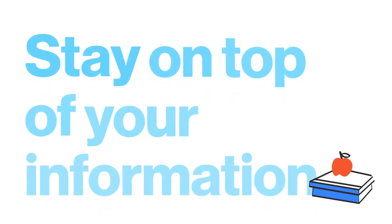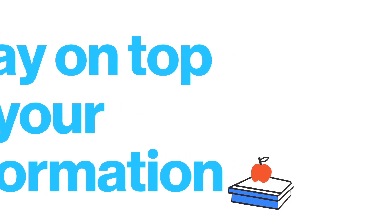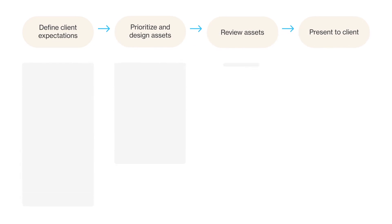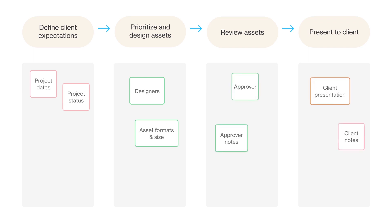To act on these steps, you need to have access to the right information. Continue mapping out your workflow by identifying the information you need at each step. For example, as a web agency, the information needed at each step will include project details, teammates involved, asset specs, approvals, and client feedback.